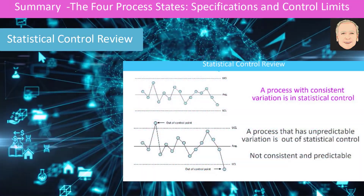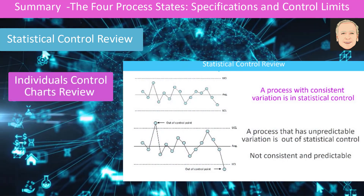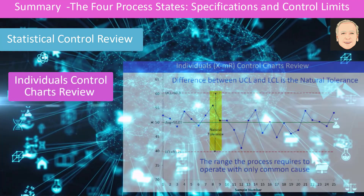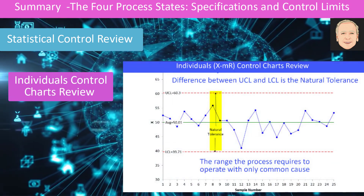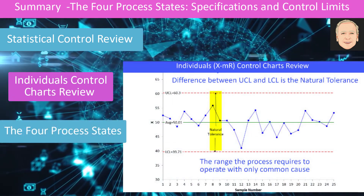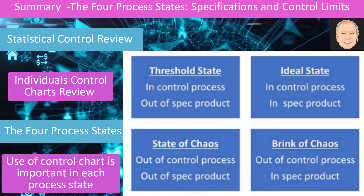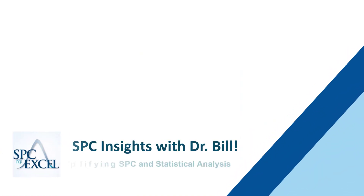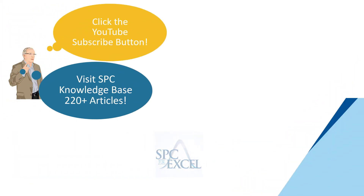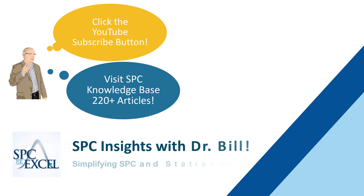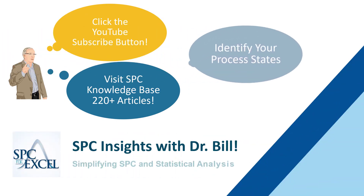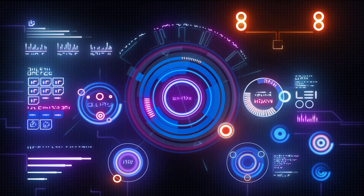In summary, we've taken a look at statistical control, then the individuals chart because we can use specifications on that chart along with control limits, and then the four process states: the ideal state, the threshold state, the brink of chaos, and the state of chaos, where you have no idea what's going to happen into the future. Thank you for watching SPC Insights with Dr. Bill. Click the YouTube button below to subscribe, visit our SPC Knowledge Base with 220-plus articles, and use our software to help identify your process state.